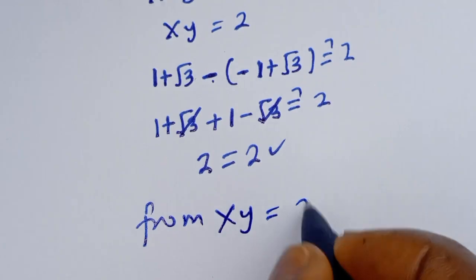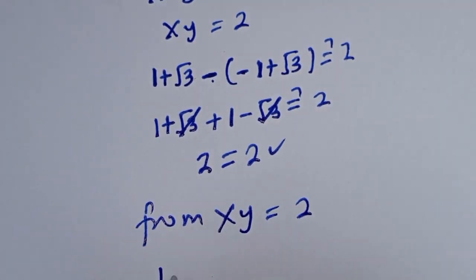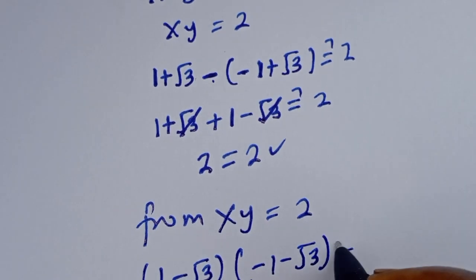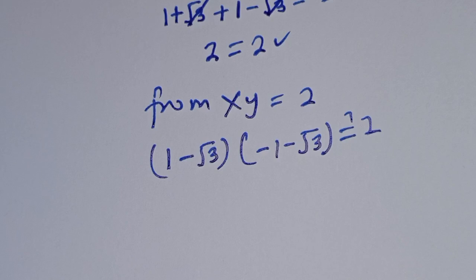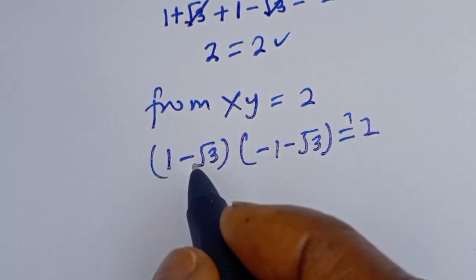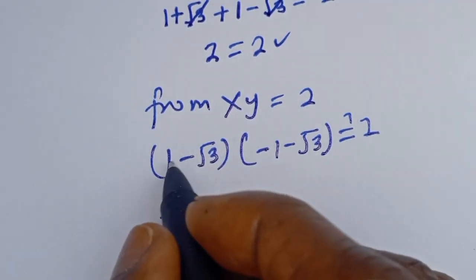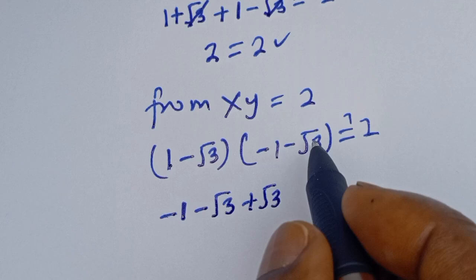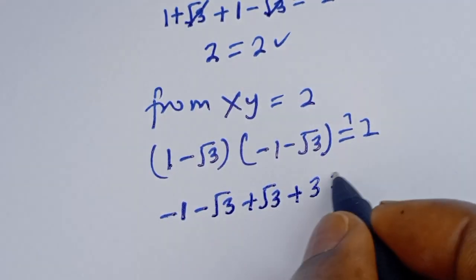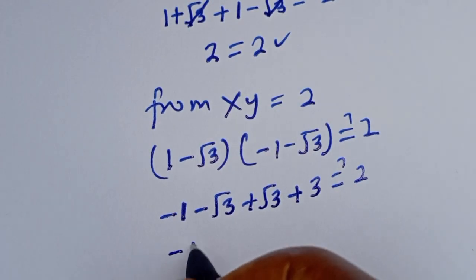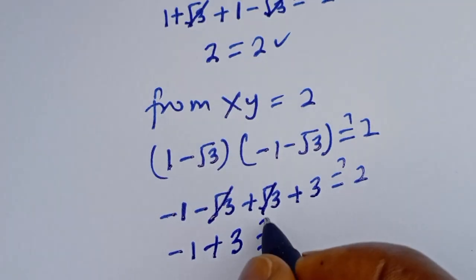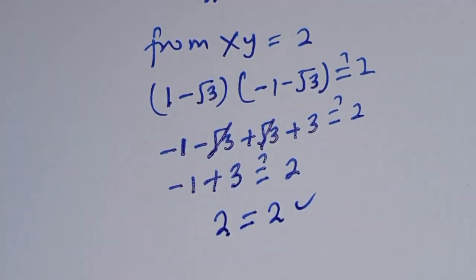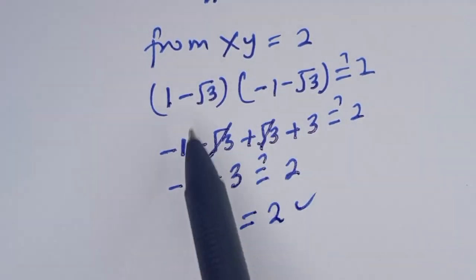Now let's check the second equation, xy equals 2, using x₂ and y₂: (1 minus √3) times (minus 1 minus √3) equals minus 1 minus √3 plus √3 plus 3, which simplifies to minus 1 plus 3 equals 2. So 2 equals 2, which is true. I hope you enjoyed the video — please like, share, comment, and subscribe. Thank you!